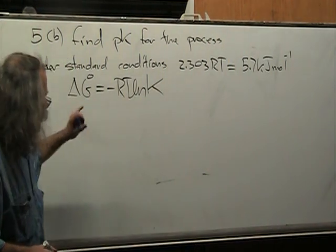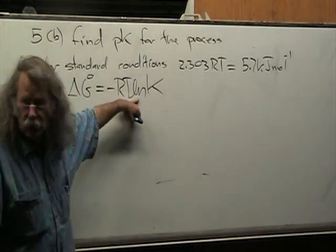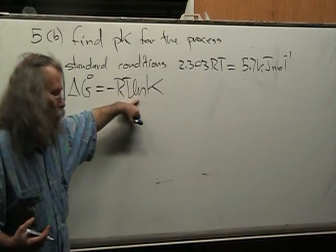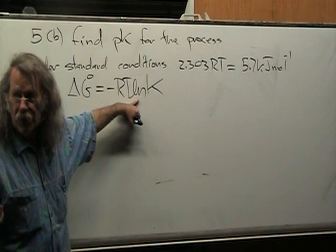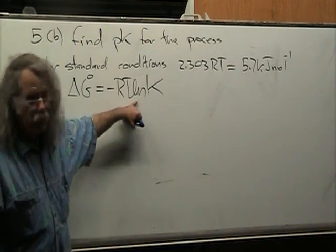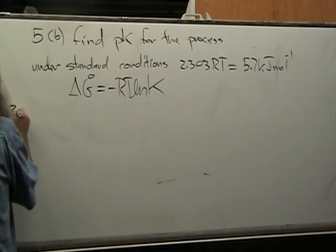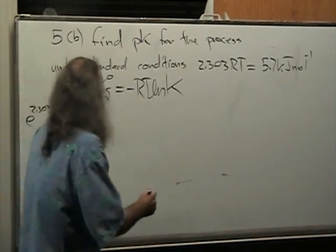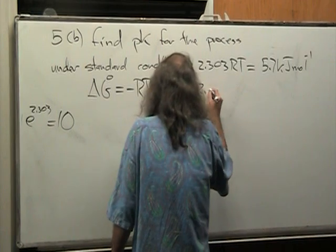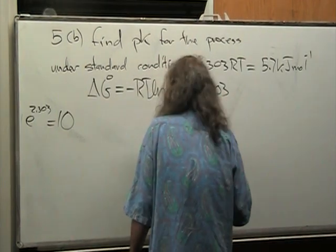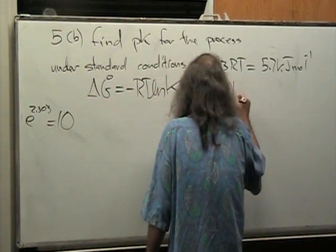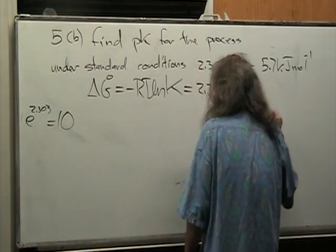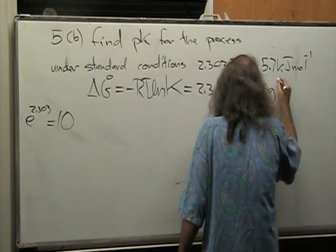And so, then we can take advantage of the fact that the natural log of something is going to be equal to 2.303 times the log of something since E to the 2.303 is equal to 10. So this means this is equal to 2.303 times RT times minus log of K.